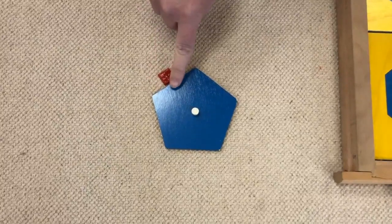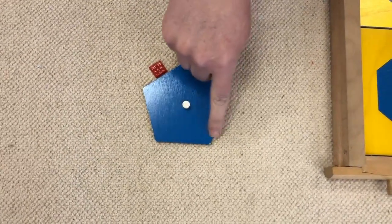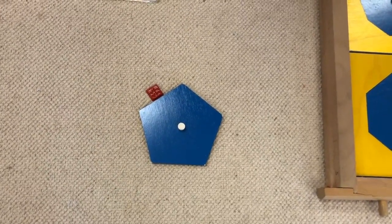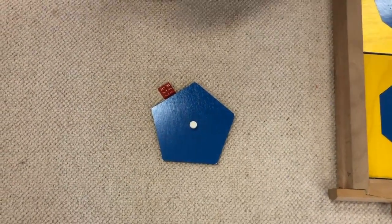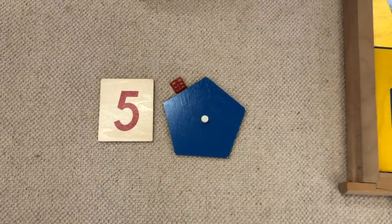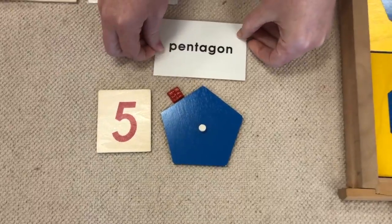Let's count. One, two, three, four, five. This is a five-sided polygon. A five-sided polygon is called a pentagon.